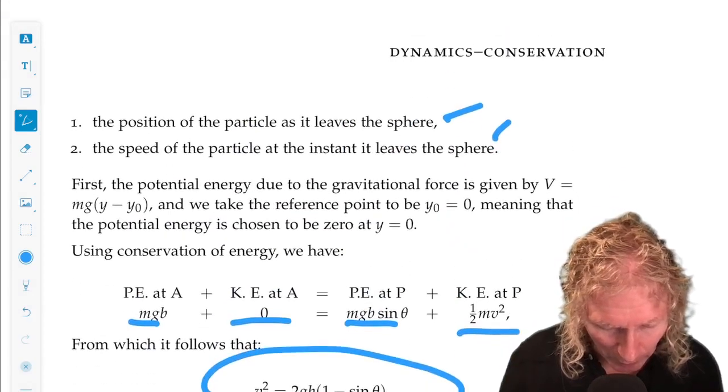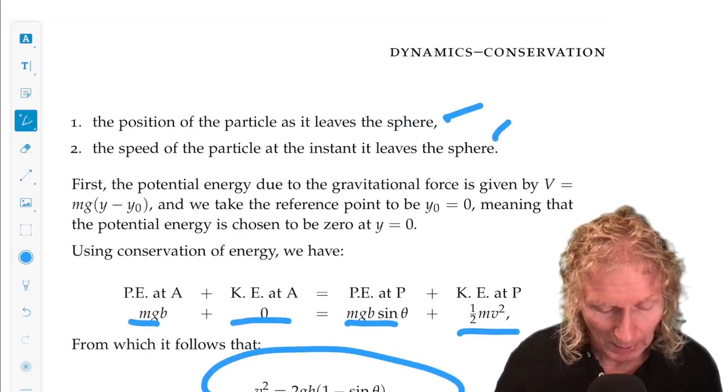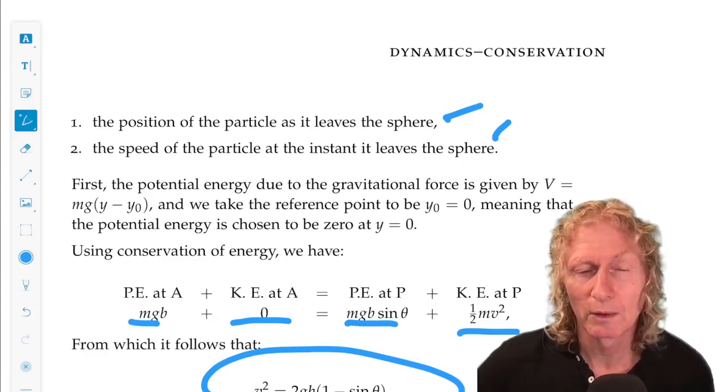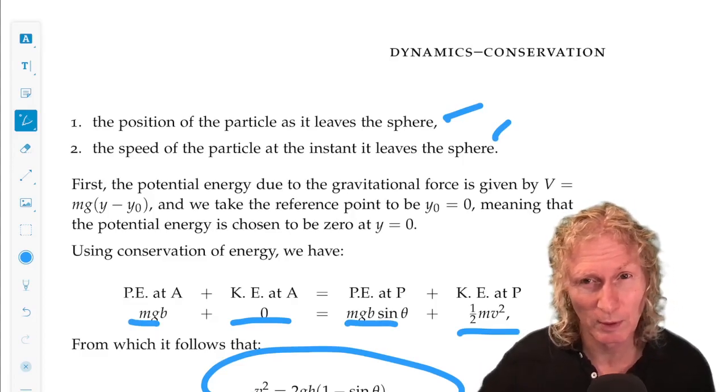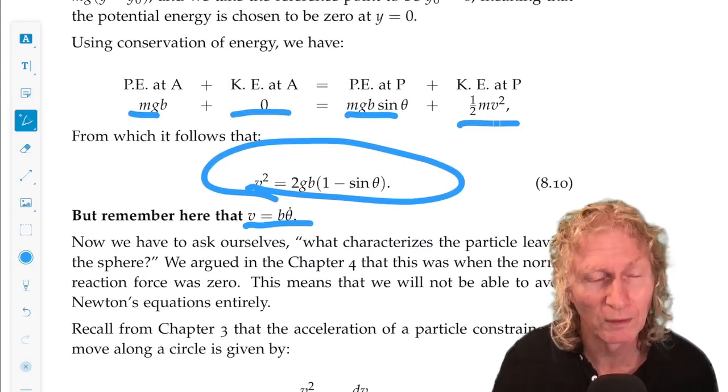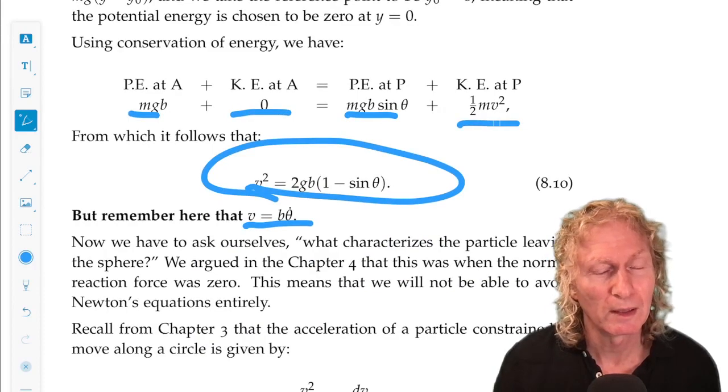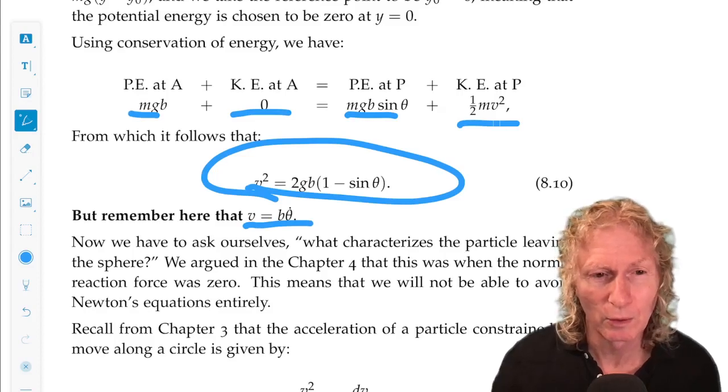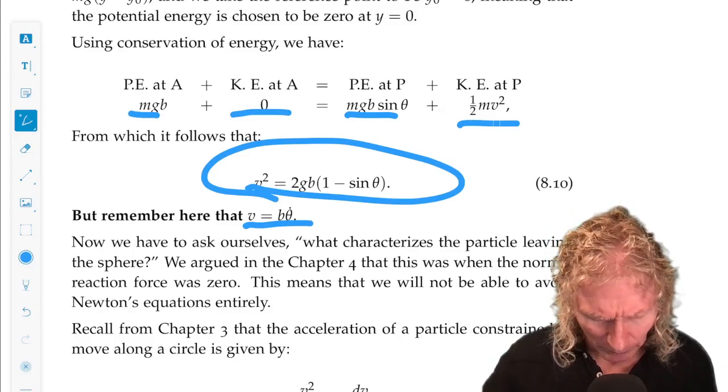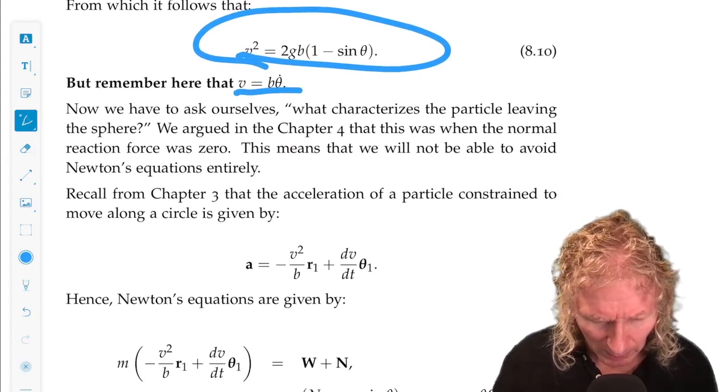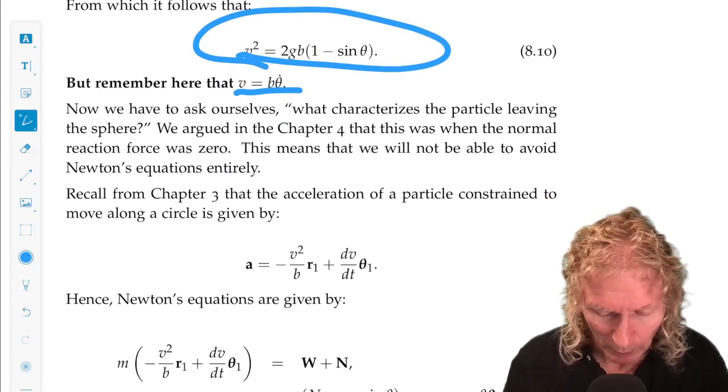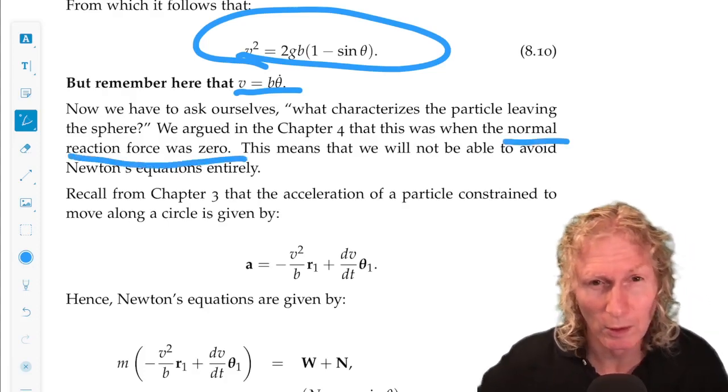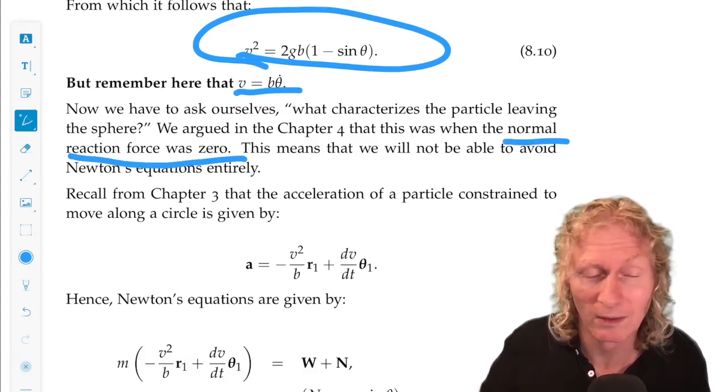Remember what we were asked. The position of the particle as it leaves the sphere, and the speed of the particle at the instant it leaves the sphere. We need a condition that characterizes the particle leaving the sphere. And we're not going to get that from energy. In the previous example, we got a lot of information from energy, but one bit we still had to integrate Newton's equation to get the height as a function of time. Here, remember that from when we considered this problem previously, the particle leaves the sphere when the normal reaction force is zero on the particle. Because it isn't pressing on the sphere anymore.